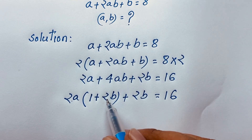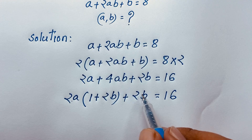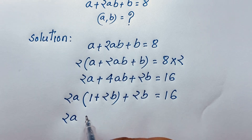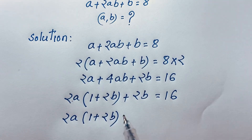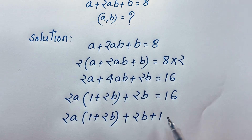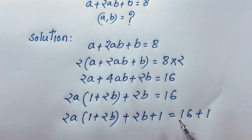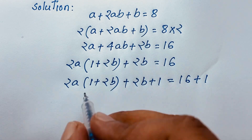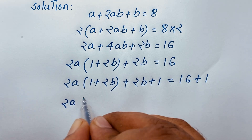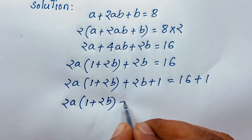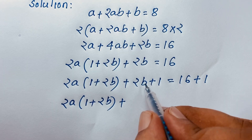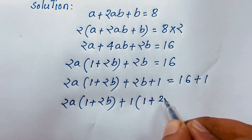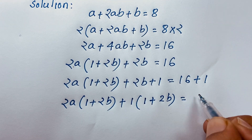Now at this moment I add 1 to both sides. So I can see this expression: 2A times (1 plus 2B) plus (2B plus 1) is equal to 16 plus 1. I add 1 to both sides, giving us 17 on the right side.